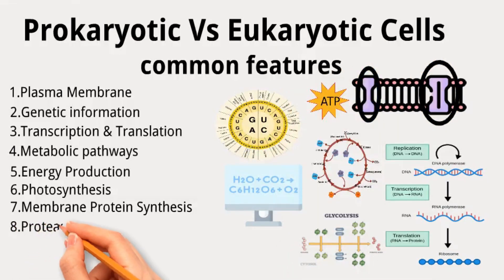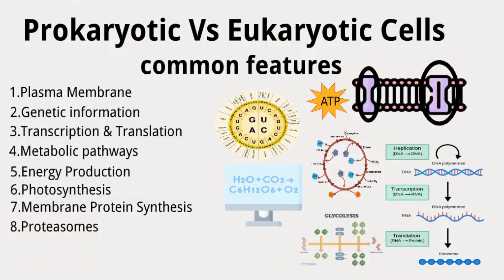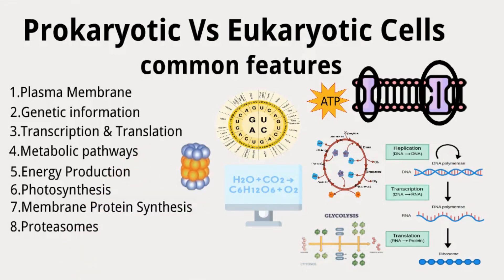Structures responsible for protein digestion, known as proteasomes, exhibit similar construction in archaebacteria and eukaryotes. These shared characteristics highlight the common ancestry and fundamental cellular processes that unite both cell types.